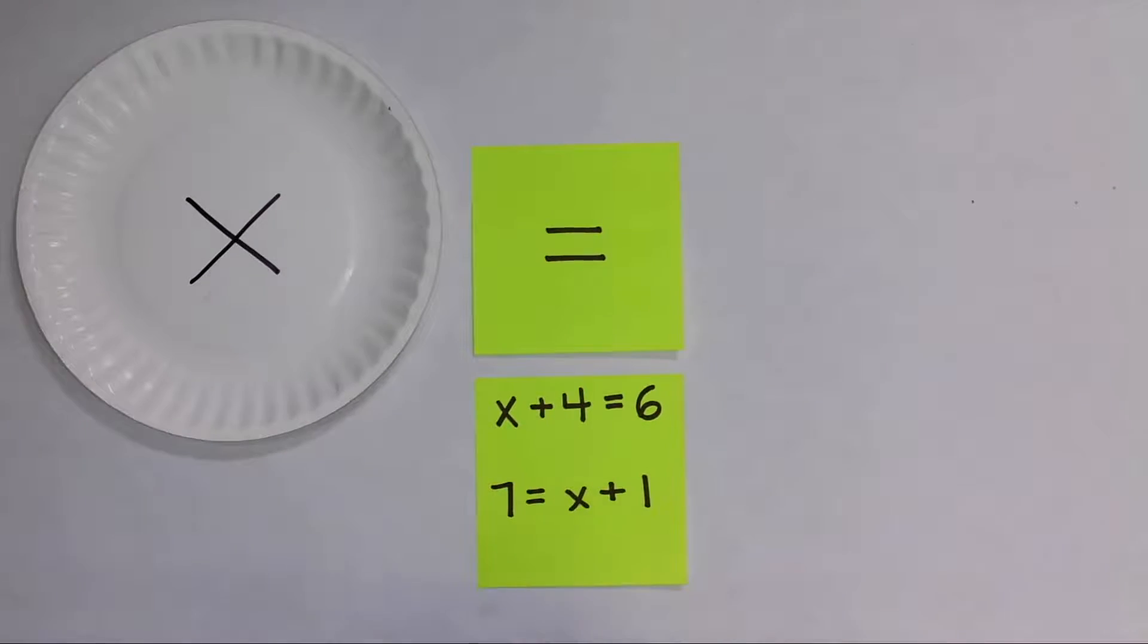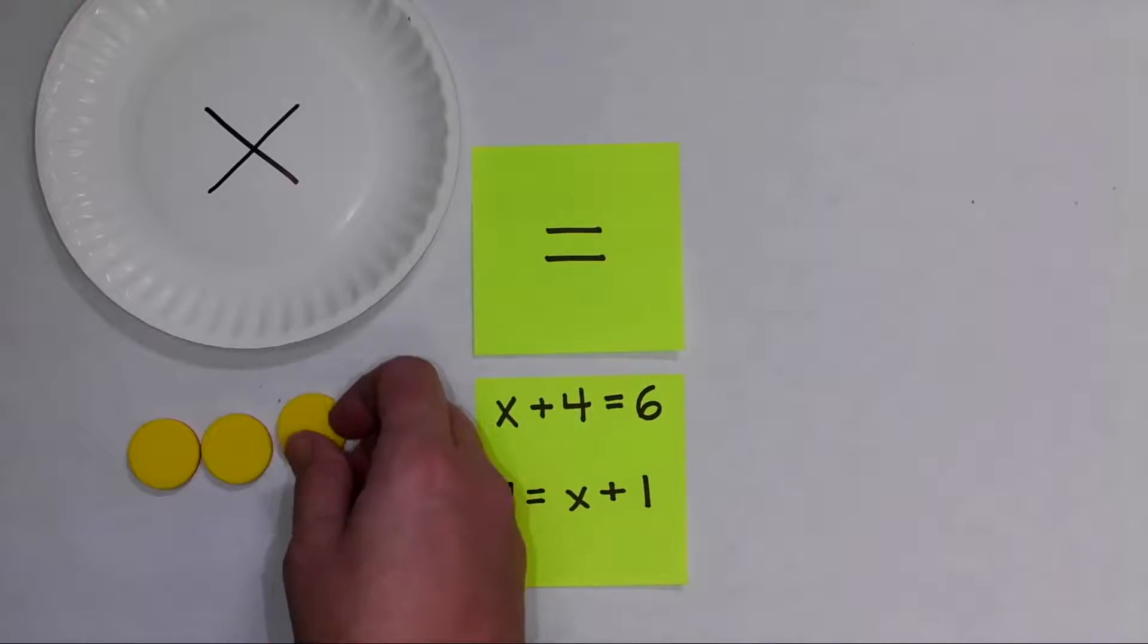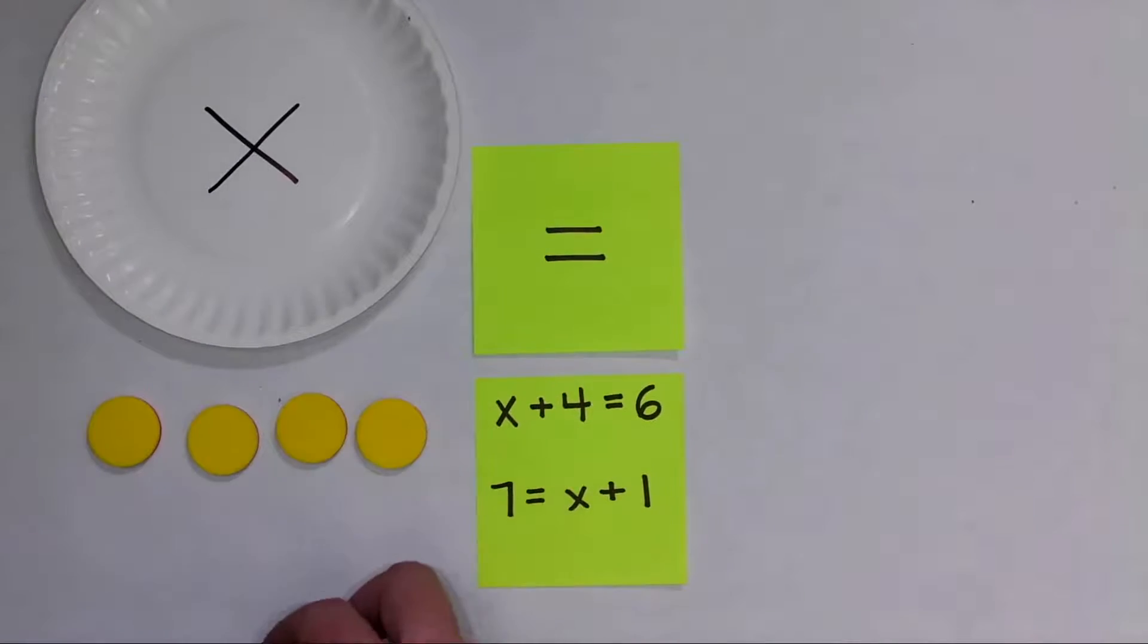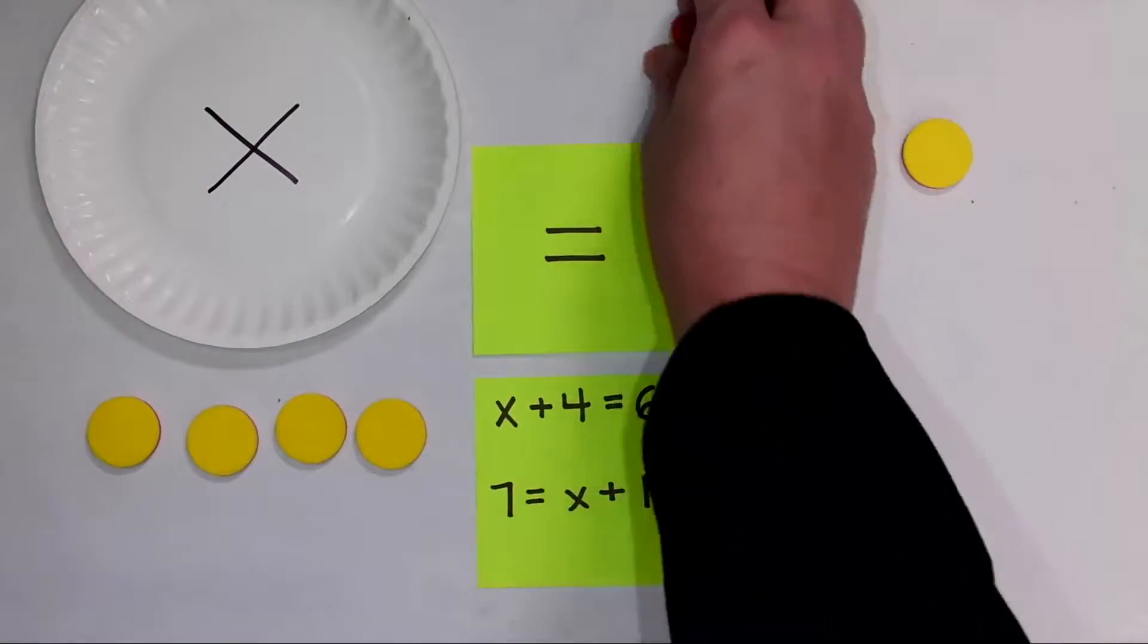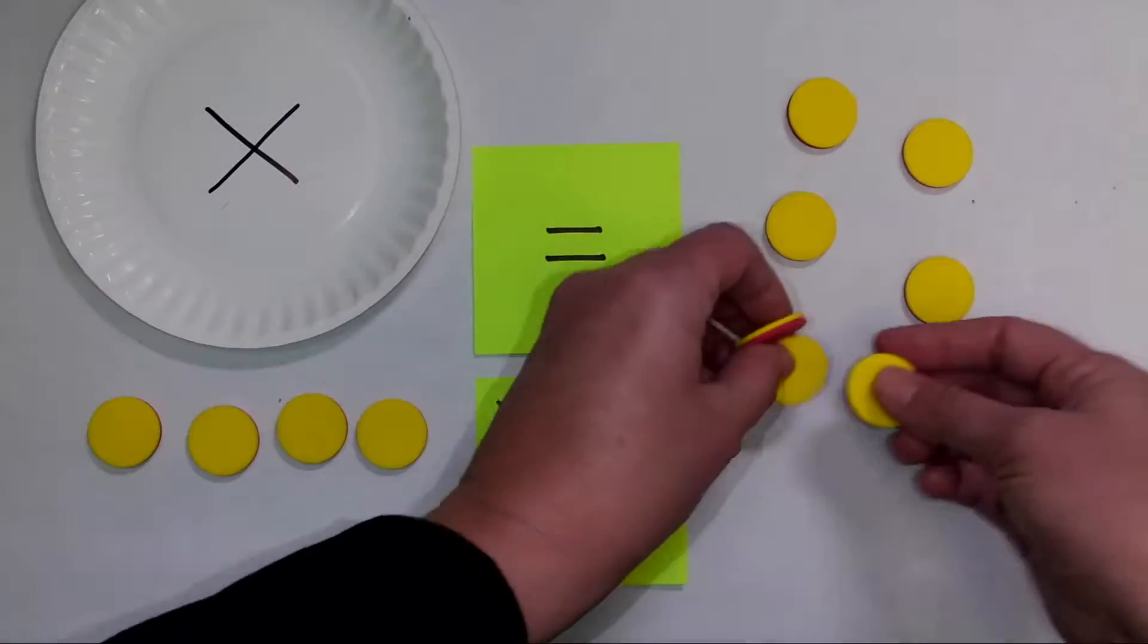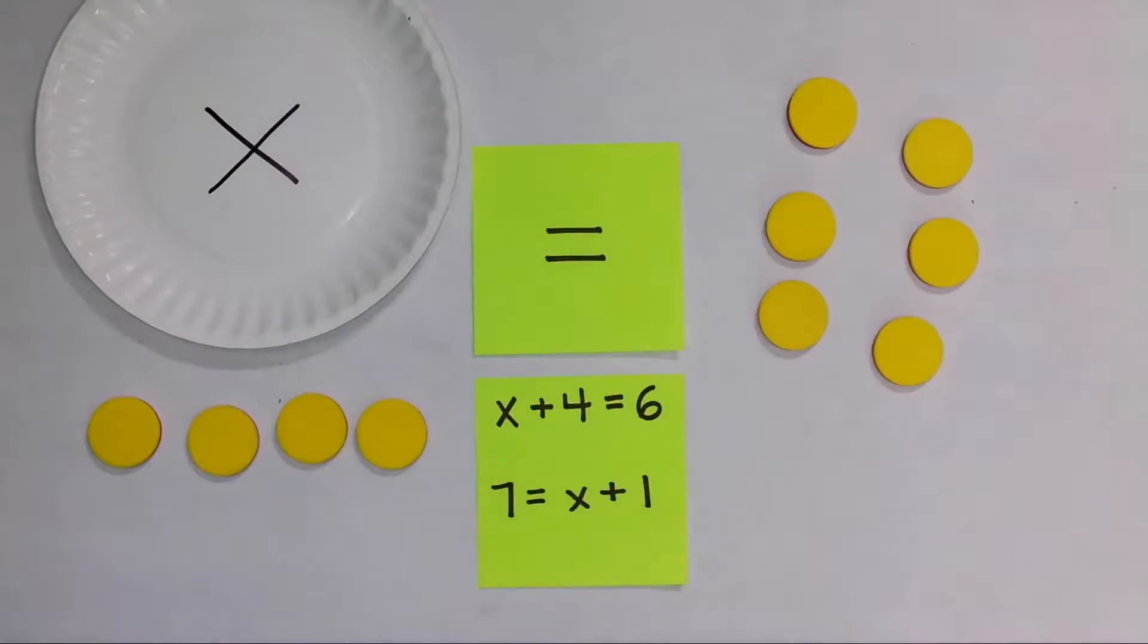You might also want to think about using two-color counters to set up and solve this problem, because then you can emphasize solving the same problem while focusing on zero pairs. I'll show you that very quickly. I have x + 4, and that equals 6. There are my six counters.